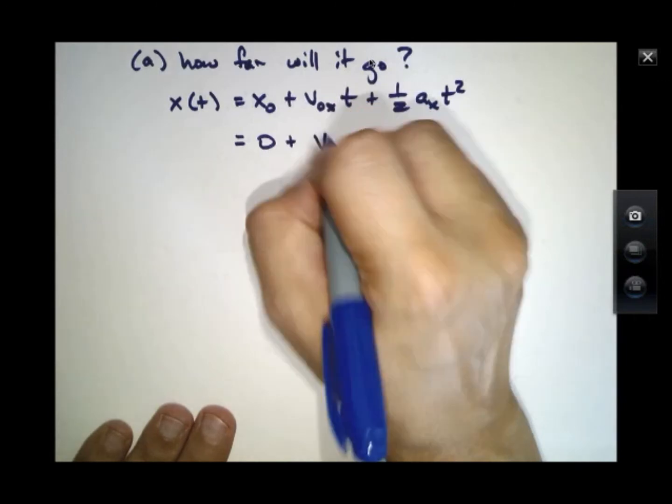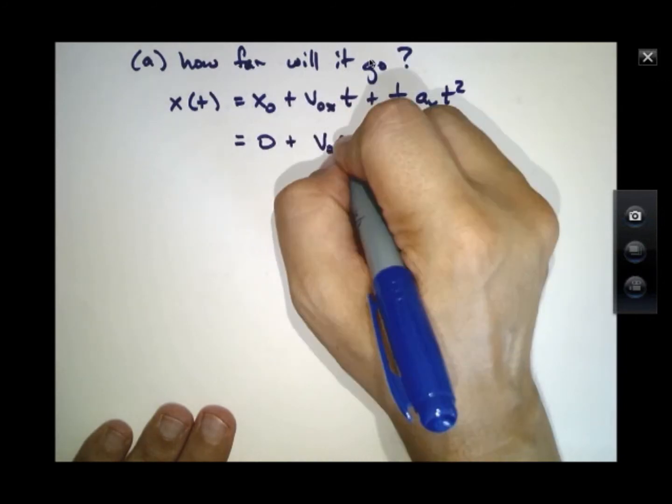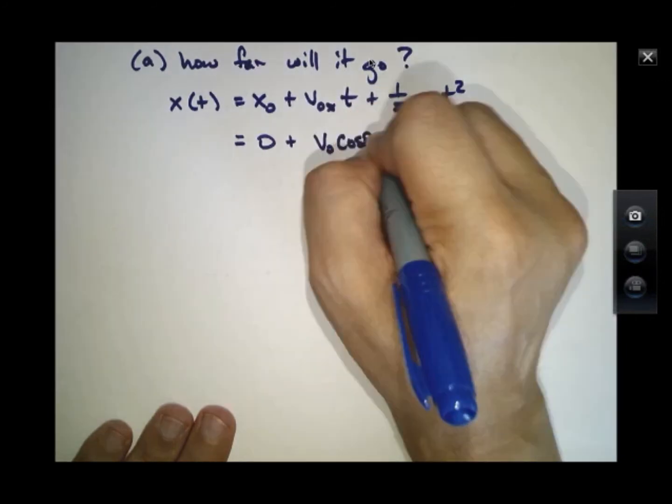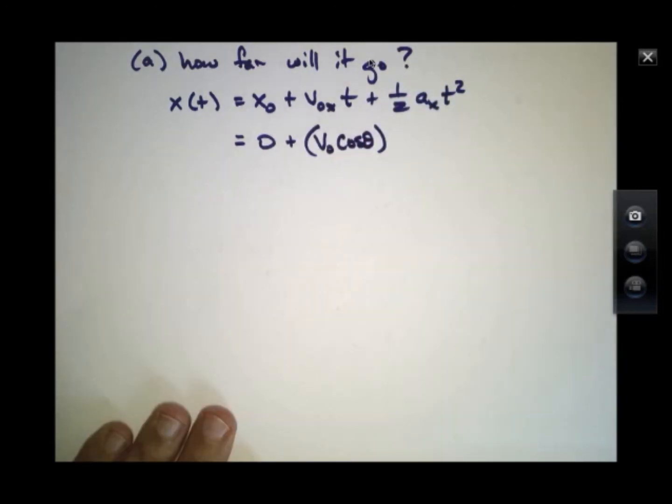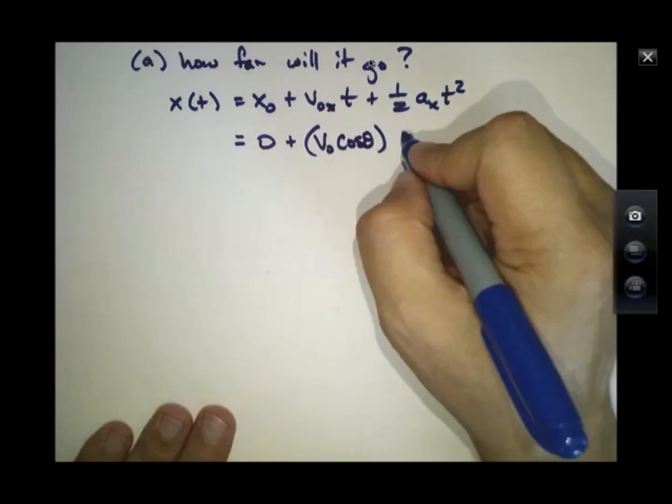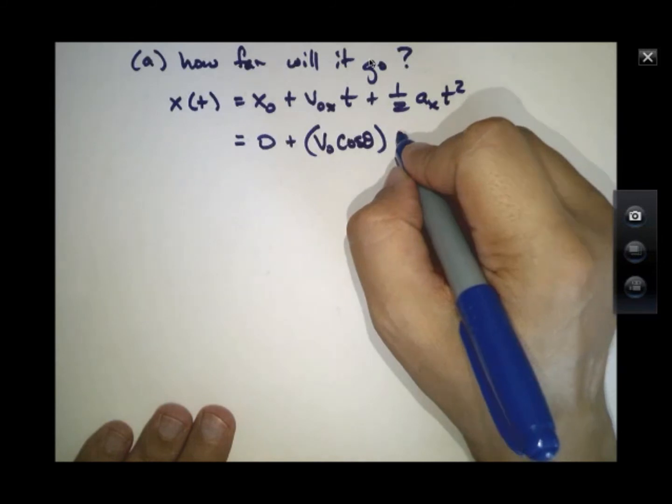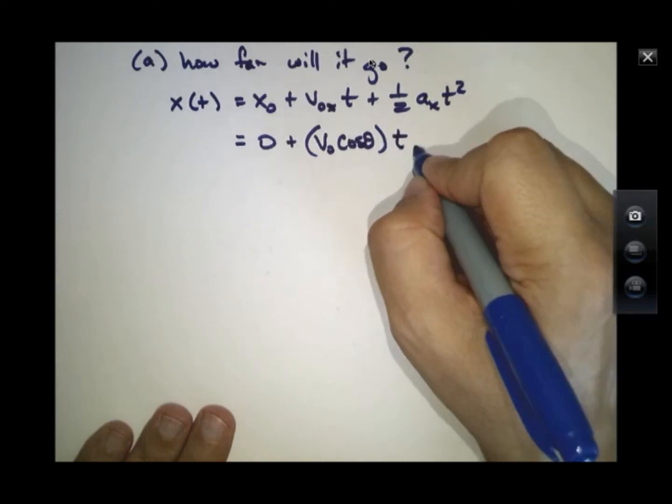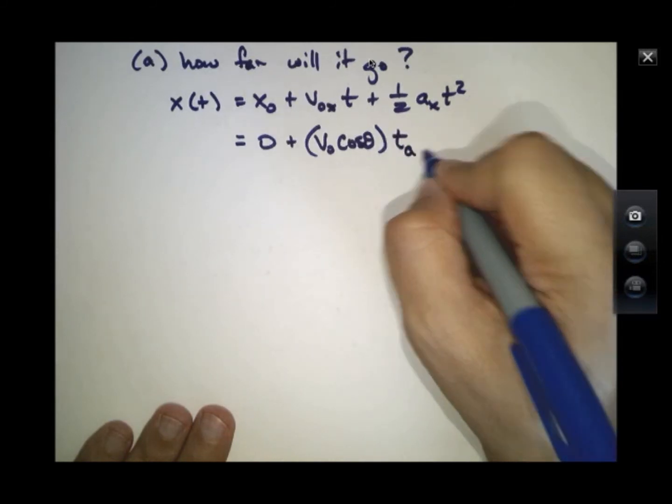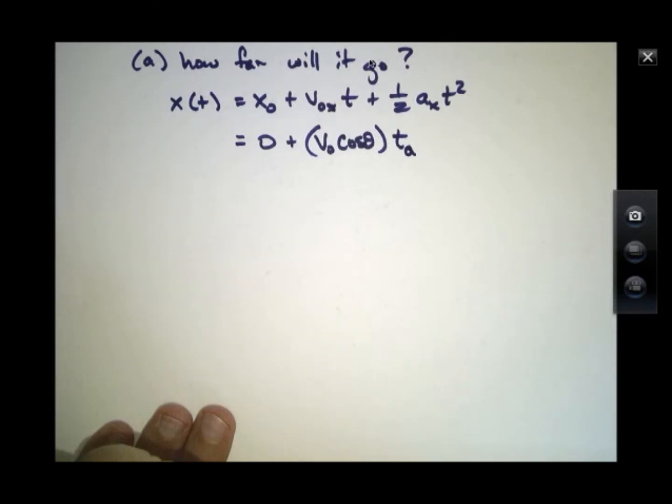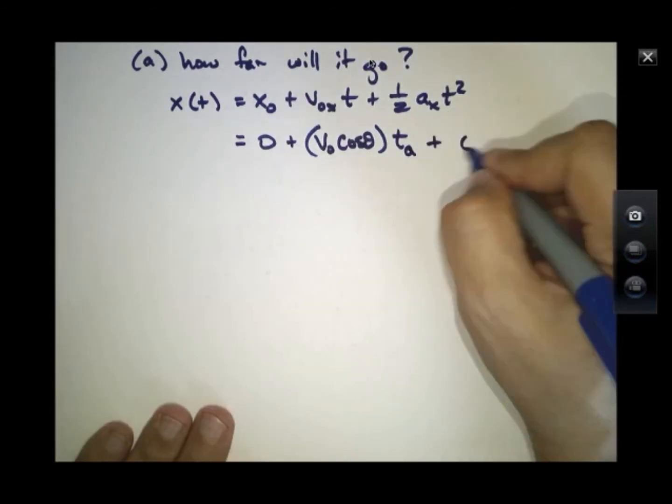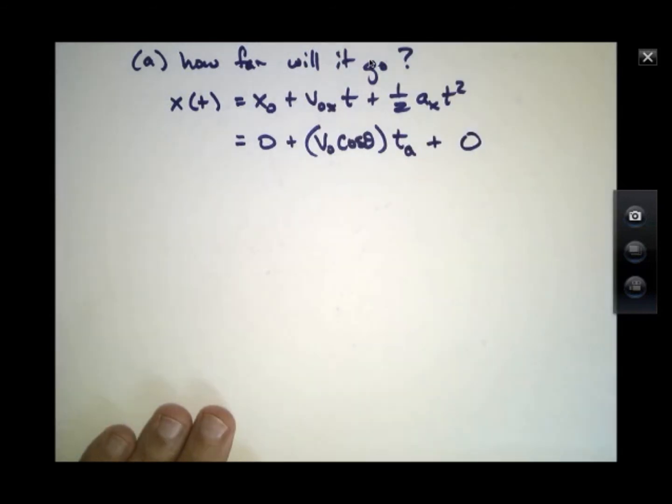This initial x-component of velocity equals v0 cosine theta. And this time is the same time that we calculated from Part A, so I'll just put that t from Part A right there. And this last term is 0 because the acceleration in the x-direction is 0.